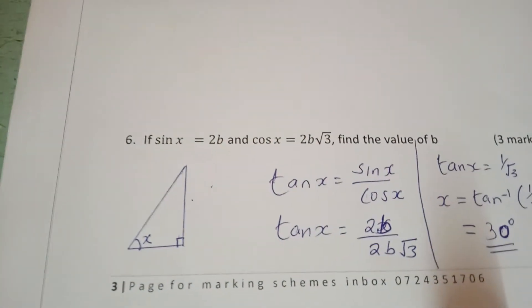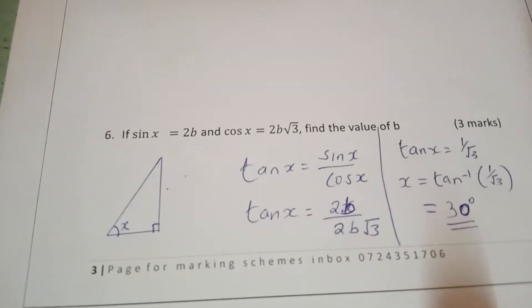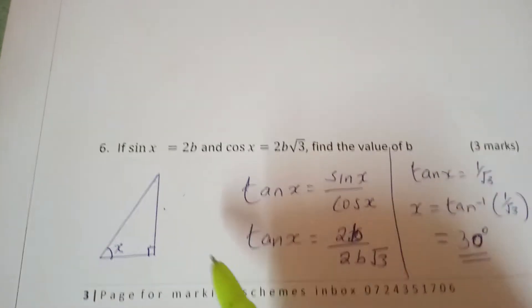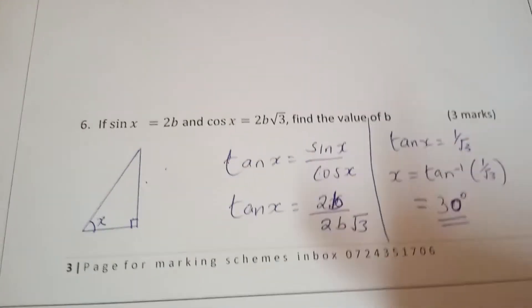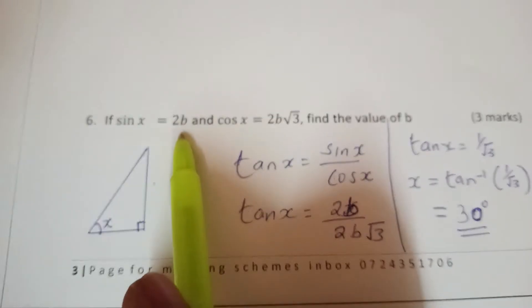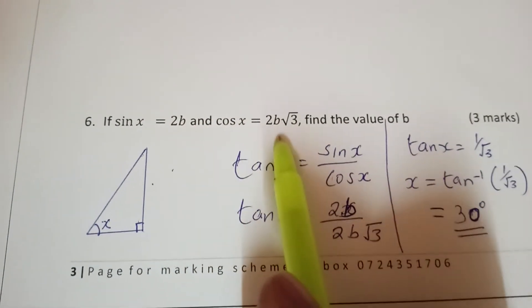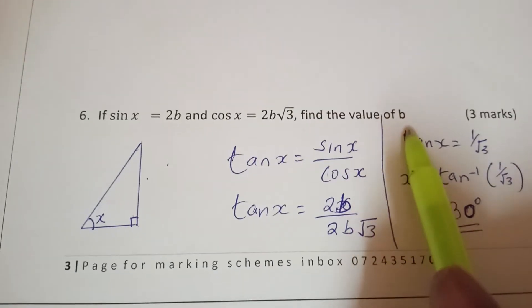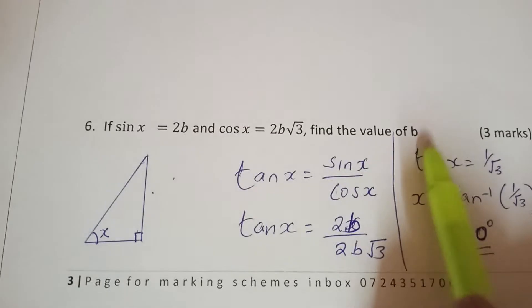If sin x equals 2b and cos x equals 2b root 3, find the value of b. Now if sine x equals 2b and cos x equals 2b root 3, find the value of b. So this one...